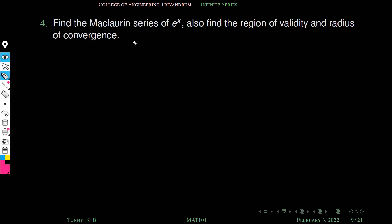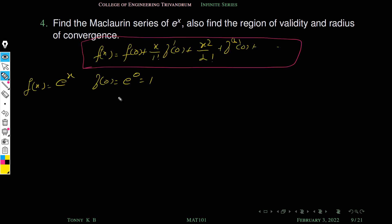Consider this problem: find the Maclaurin series of e^x. Also find the region of validity and radius of convergence. Maclaurin series means the series is about 0. This is the formula of Maclaurin series, so we have to find f of 0, f dash of 0, etc.